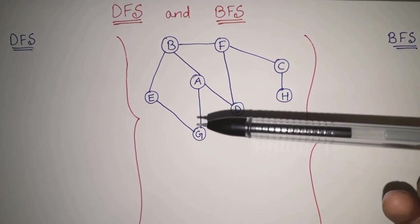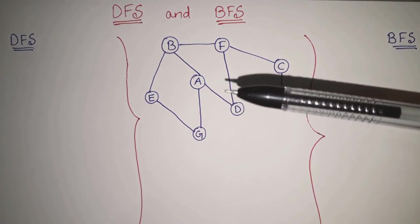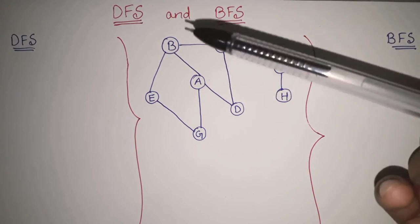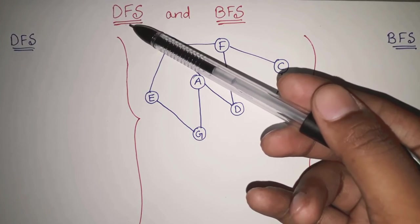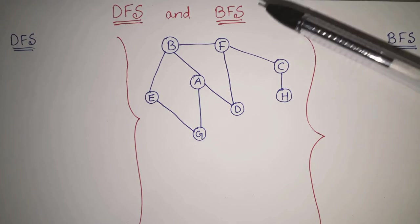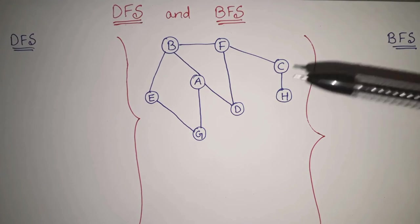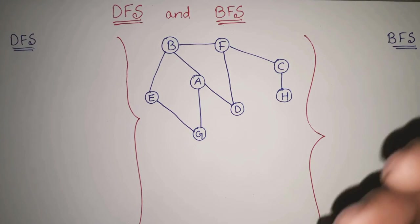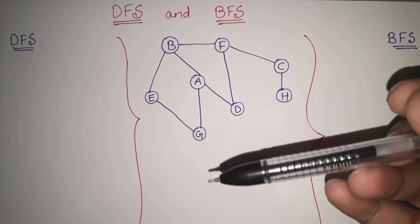For doing that, you must have the basic idea about the data structures like stack and queue. Because in order to do traversal with the help of DFS, we will be using the stack data structure, and for BFS traversal, we will be using the queue data structure. So if you know the basics about those data structures, then we are good to go. Let's start.